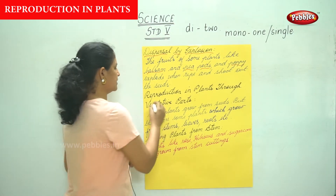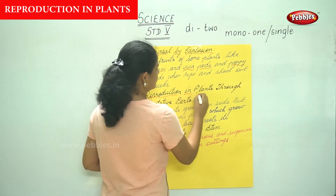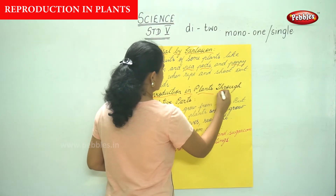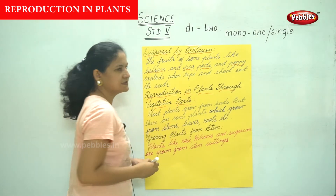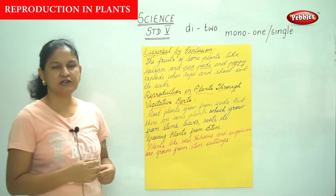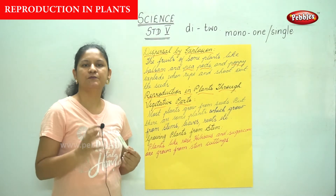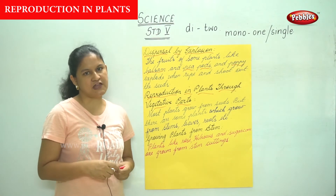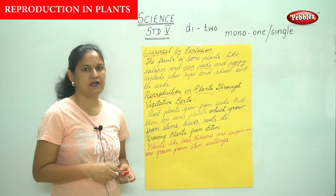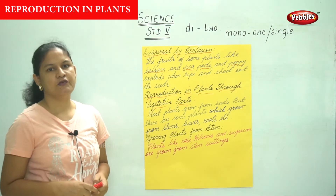Moving on, we are going to see reproduction in plants through vegetative parts. Reproduction is nothing but producing more of their kind.